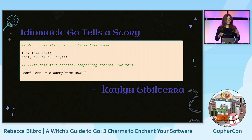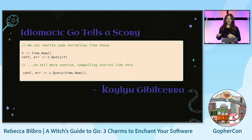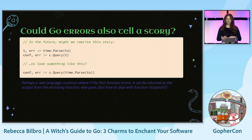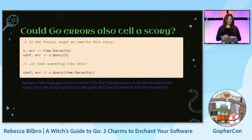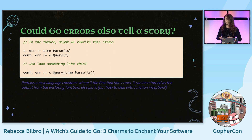I'm also thinking about Kaylin's talk on the first day, 'Idiomatic Go Tells a Story,' where she talked about rewriting narratives that are wordy — using one line where we might use two. I'm curious if Go errors might one day also tell a different story. If you can reduce two lines to one, can we reduce two errors to one error in a way that helps us understand whether the error happened when we were parsing or when we were querying? It sounds like the Go developers are interested in our feedback, and we're at a conference — so I'm curious what your thoughts are.